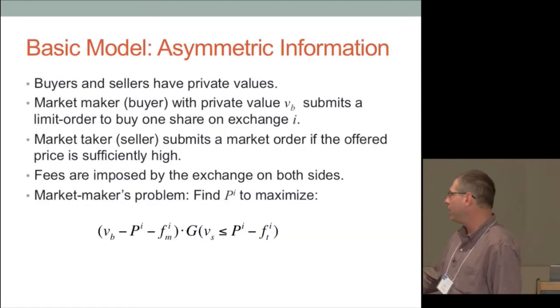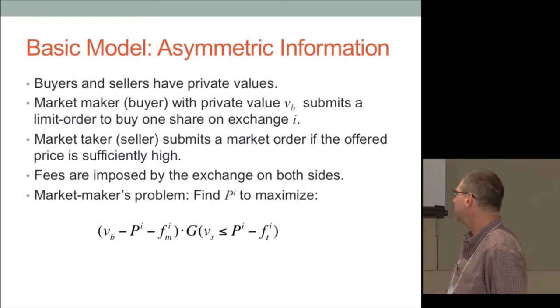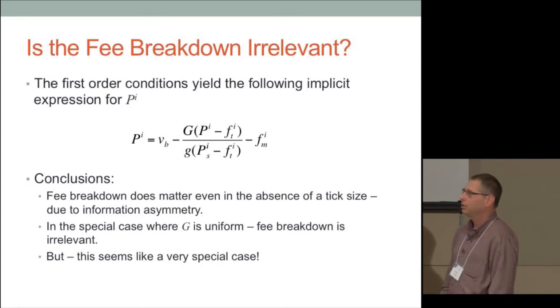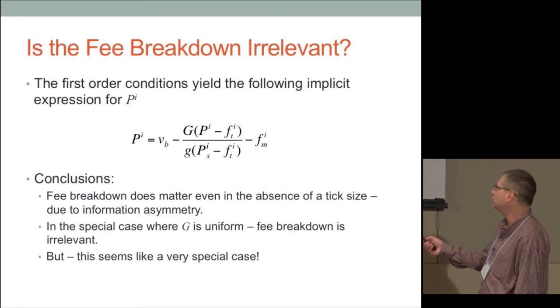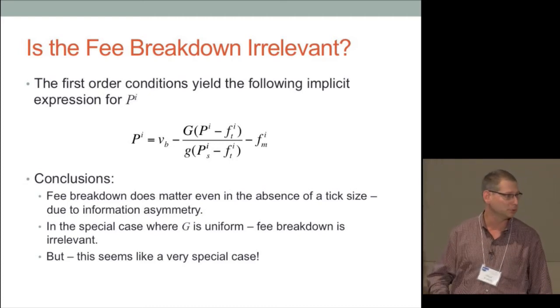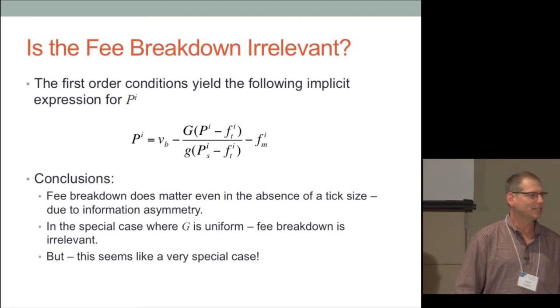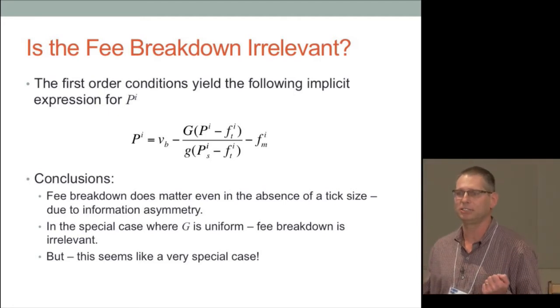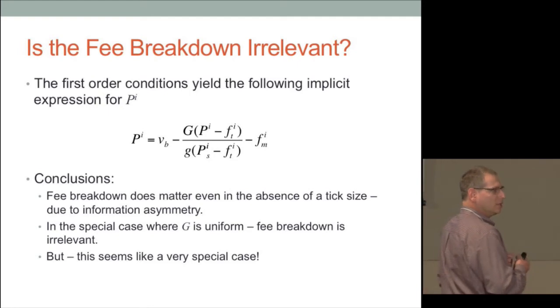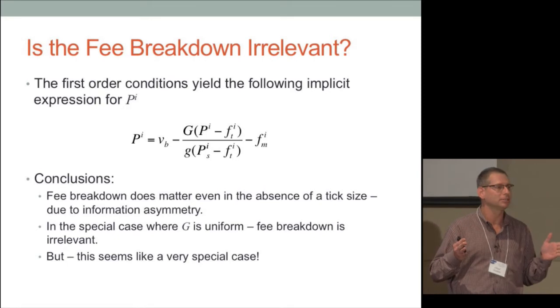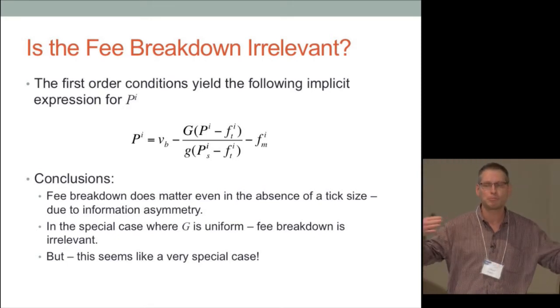The make fee lowers the value to the buyer of obtaining the transaction; the take fee lowers the probability of execution. The first-order condition is highly nonlinear — g is the cumulative distribution, little g is the density, and they can be anything. In general, the make fee and take fee do affect things. The reason we cannot renegotiate prices is that we don't know the private values — if you sit down to renegotiate given the fees, you would just lie. So the neutrality result breaks down in general.